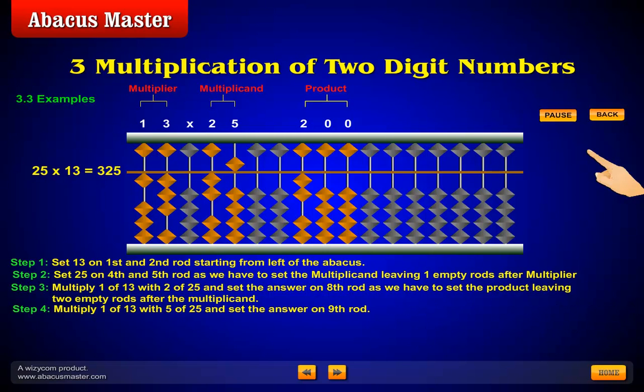Step 4. Multiply 1 of 13 with 5 of 25 and set the answer on ninth rod. Step 5. Multiply 3 of 13 with 2 of 25 and add it to ninth rod.